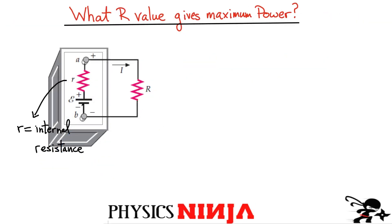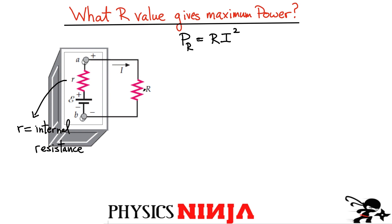A real battery consists of an ideal battery with an internal resistance in series with it. I want to connect this battery to some external resistance R and find which value of R gives maximum power. The power dissipated by resistance R is simply R multiplied by the current squared. But there are two terms here — the power depends not only on R but also on the current, which itself depends on R.